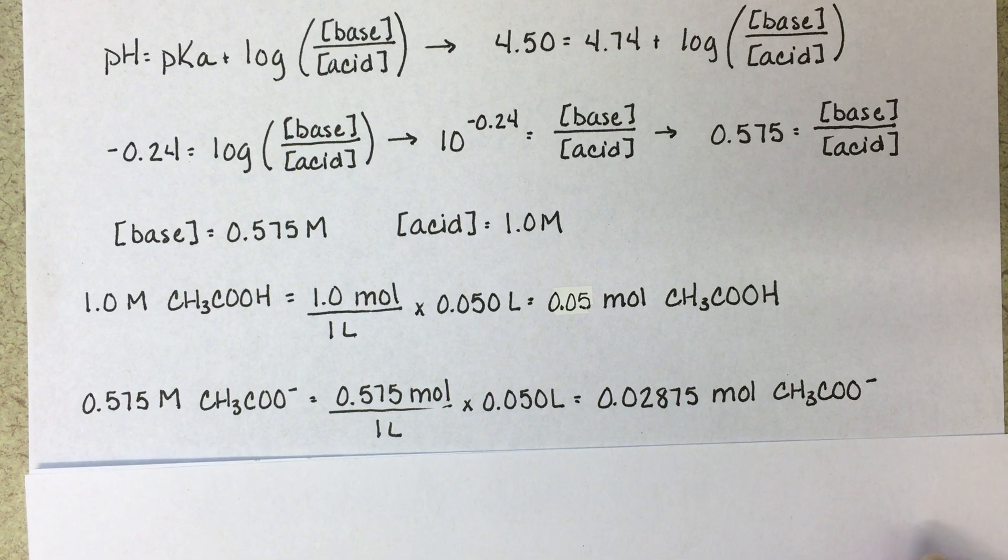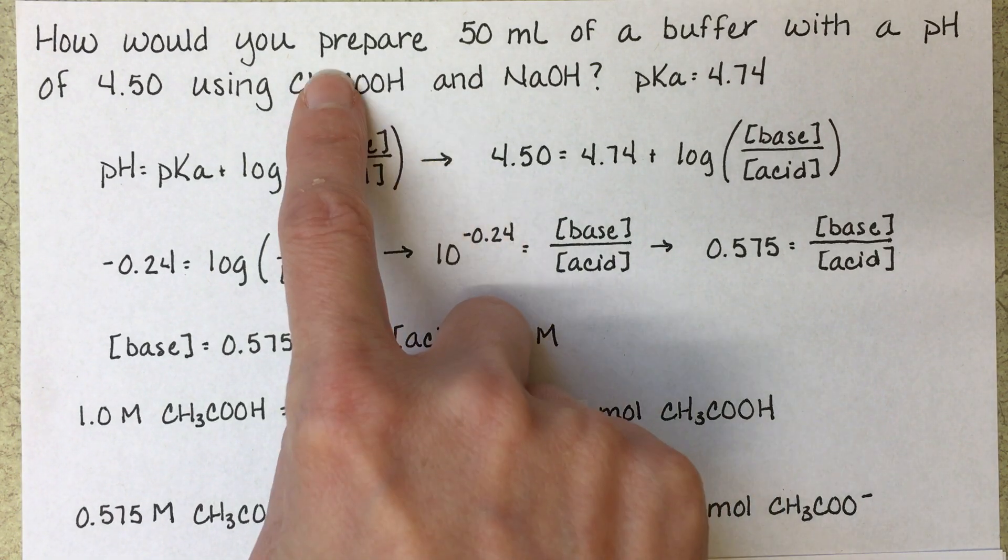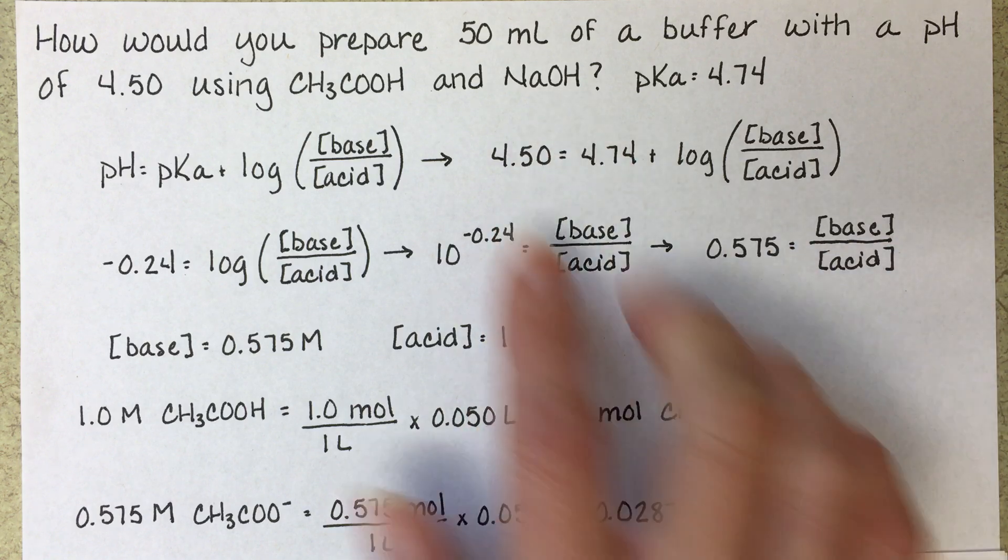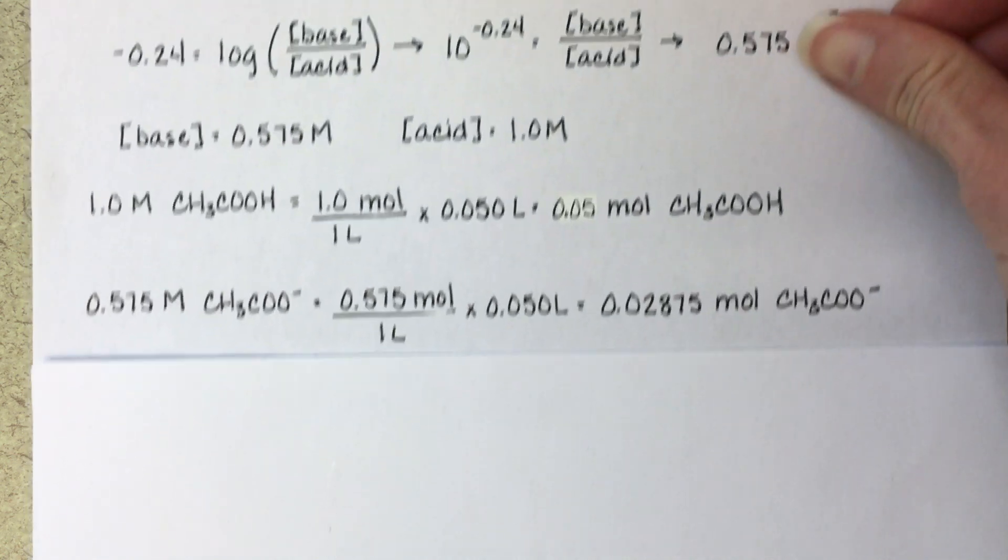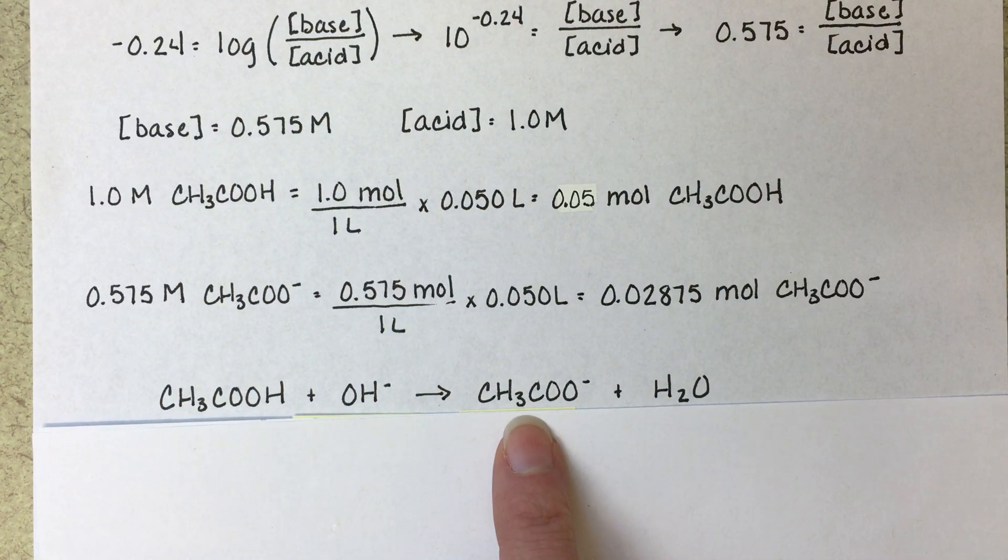Now, problem is that we are not being provided with any acetate in this problem. We only have acetic acid and sodium hydroxide. However, when you react acetic acid with sodium hydroxide, one of the products of that reaction is acetate.